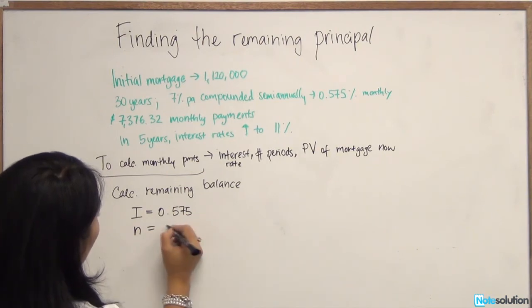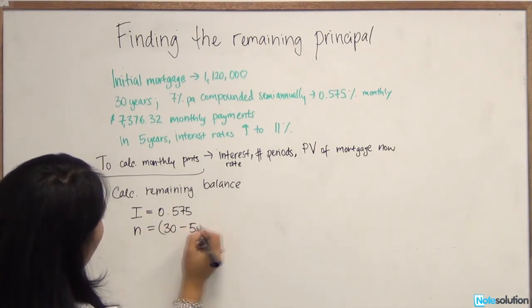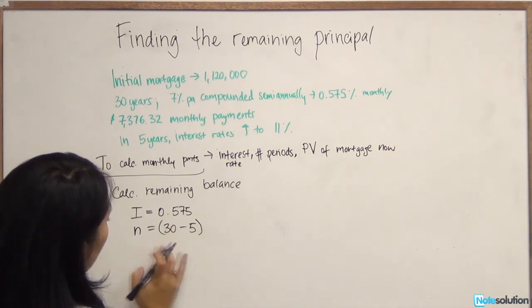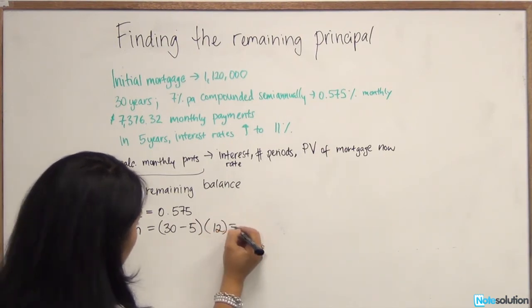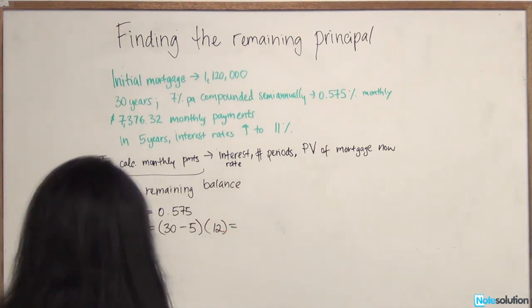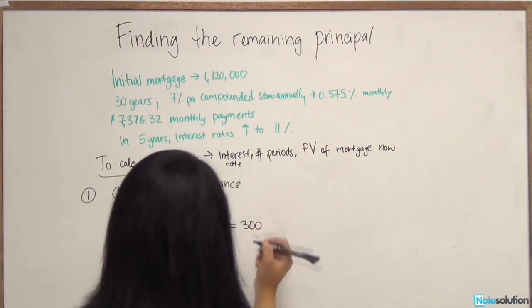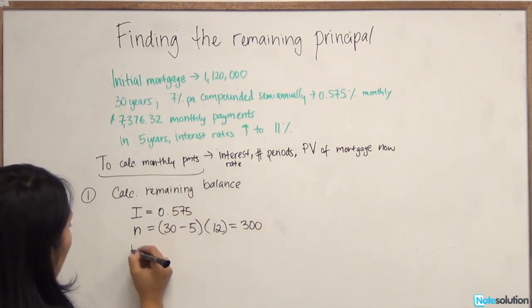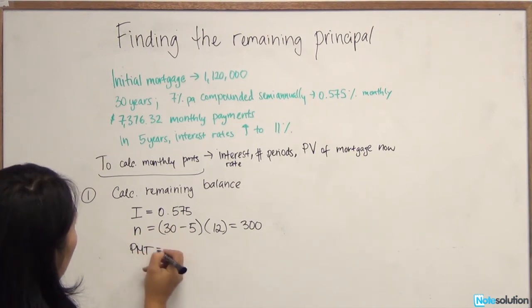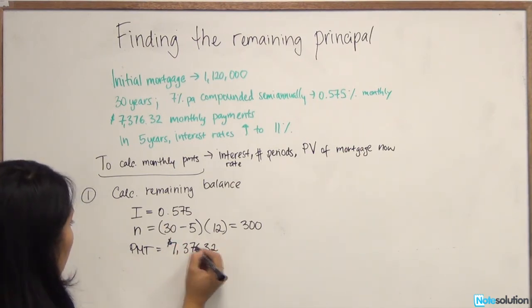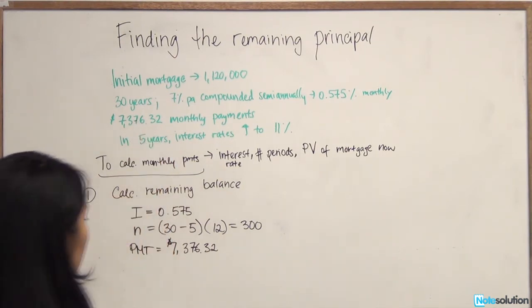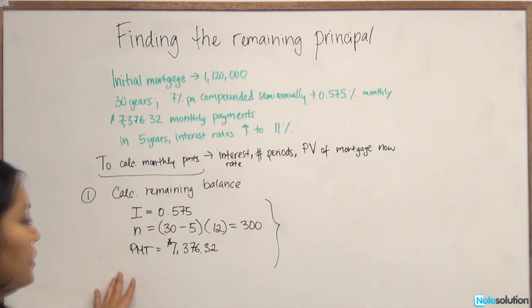We're going to have I equal to 0.575. N is going to be equal to 30 minus 5. So 30 years have gone by, meaning that 25 years remaining on the mortgage. And we're going to multiply it by 12 to make sure that we do it in monthly terms. And that's going to be equal to 300. So the monthly payment, the initial monthly payment, we also know we have 7,376.32.